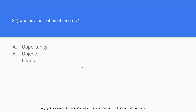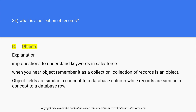Question 84: What is the collection of records called? Options: opportunity, objects, or leads. The answer is objects. A collection of records is called an object, which is also known as a table in Salesforce. Whenever you see 'collection of records,' think objects.